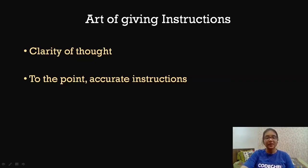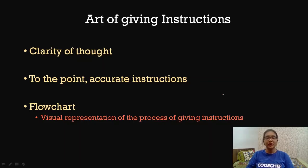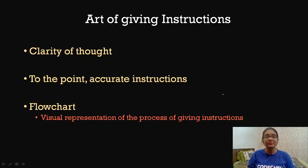The art of giving instructions requires clarity of thought and to-the-point, accurate instructions. For understanding the art of giving instructions, we will be using flowcharts in order to understand how to give proper instructions. A flowchart is the visual representation of the process of giving instructions. Before jumping to a programming language and directly starting to code, it will be better for us to start with a flowchart, because the first and foremost thing we need to learn is the art of giving instructions. Without that, we will never be able to be a good programmer.